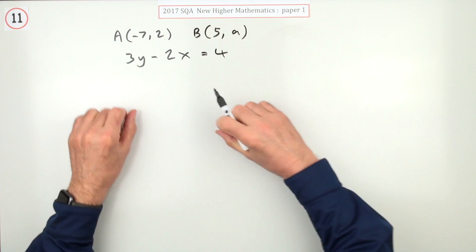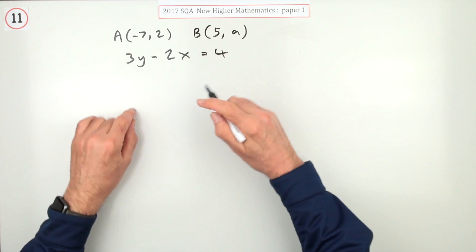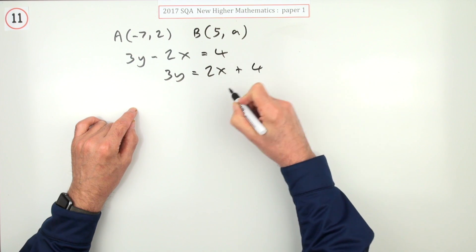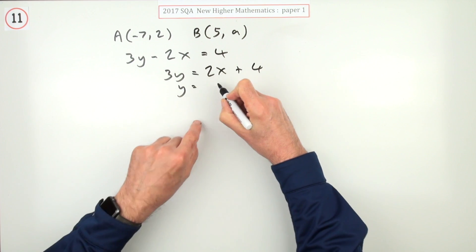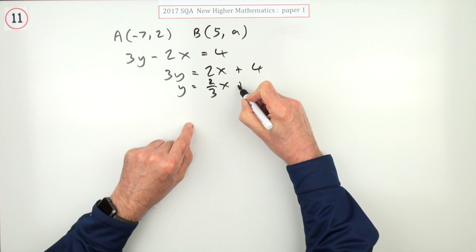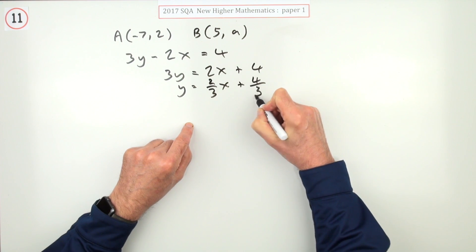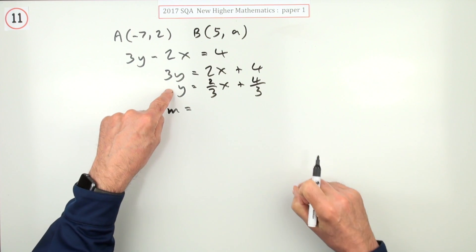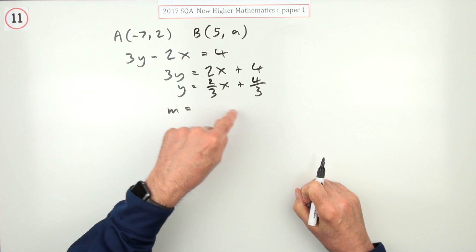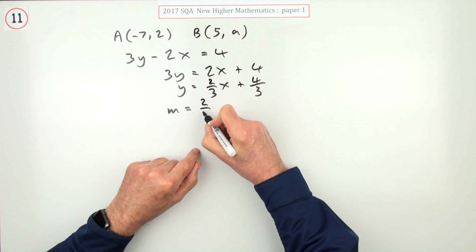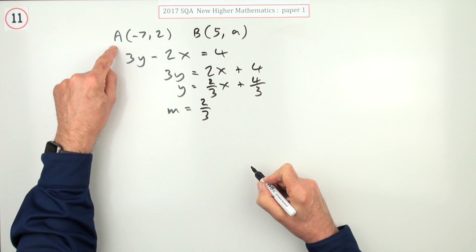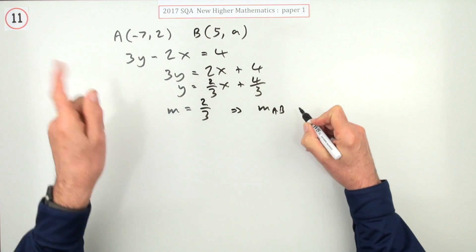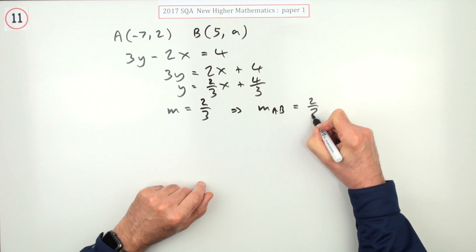Well, the gradient of that line segment AB must be the same as the gradient of this line. So rearrange that: 3y = 2x + 4, so y is, dividing by 3, two-thirds of x, also the 4 divided by 3. The main thing is what's the gradient of this line? y equals mx plus c. There it is, m is two-thirds. That means the gradient of AB, if it's parallel, should be two-thirds.